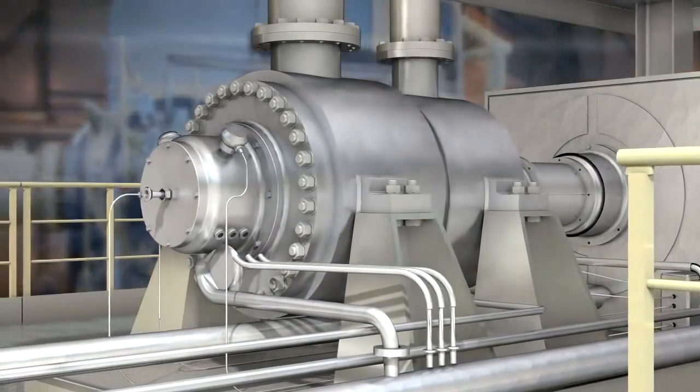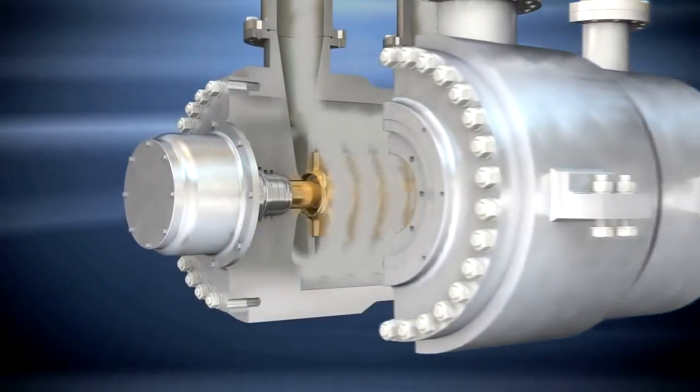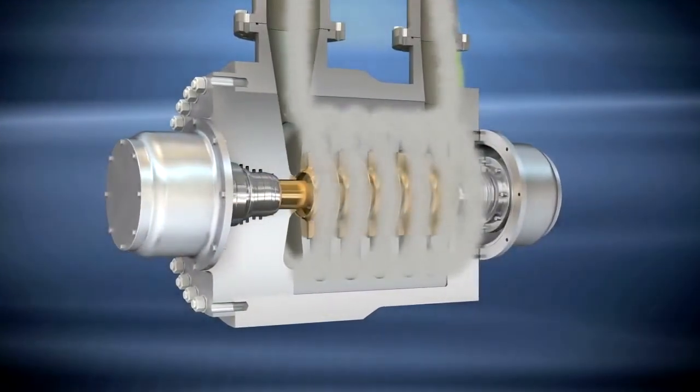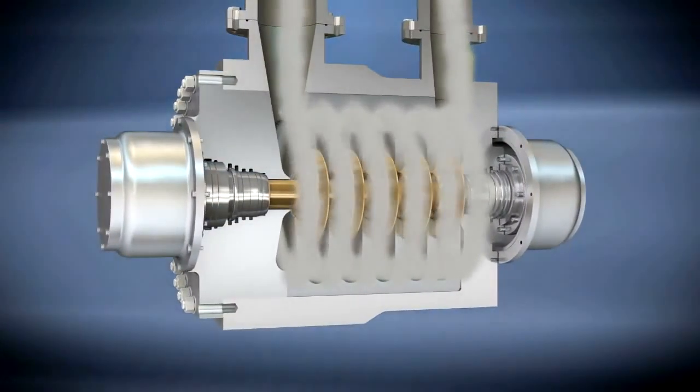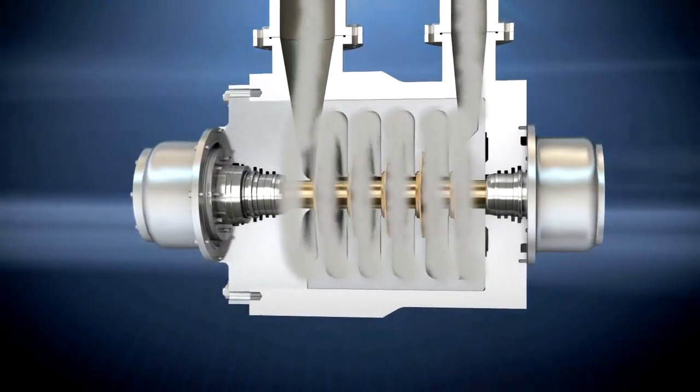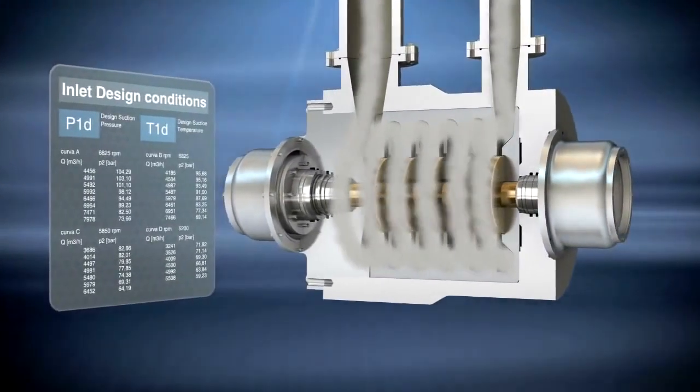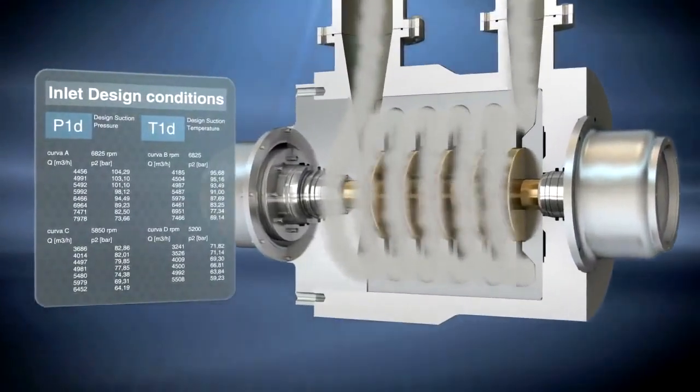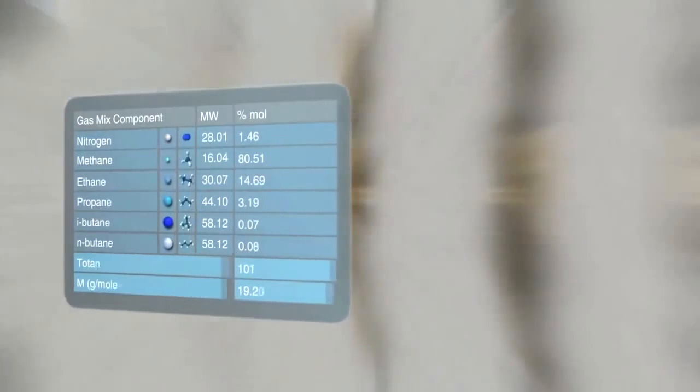The current centrifugal compressor anti-surge protection systems give a limited vision of operative parameters and their related conditions of danger. A vision limited on a particular fixed reference status, limited because it does not foresee effects of possible variations in chemical gas composition.